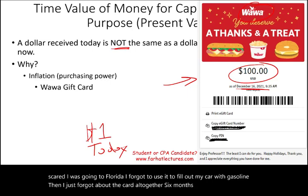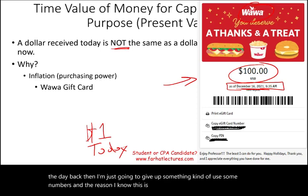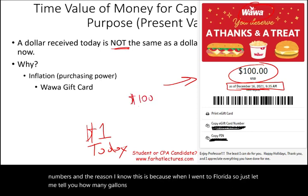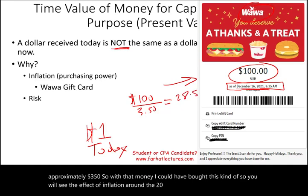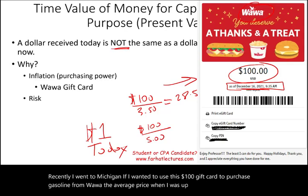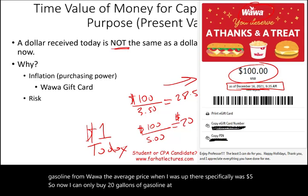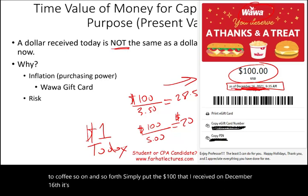Six months later, this $100 card — which was worth $100 when he gave it to me on December 16 — is not the same as today. Back then the gasoline was approximately $3.50, so with that money I could have bought around 28.5 gallons of gasoline. Recently, I went to Michigan, and if I wanted to use this $100 gift card, the average price was $5, so now I can only buy 20 gallons. The same concept would apply to coffee, and so on. Simply put, the $100 received on December 16 is not worth $100 today, which is only six months later.